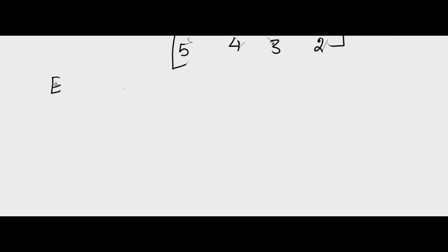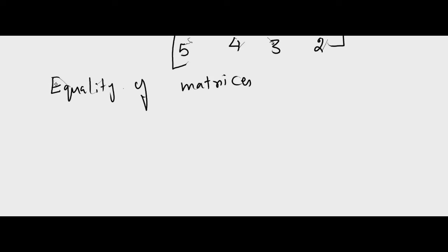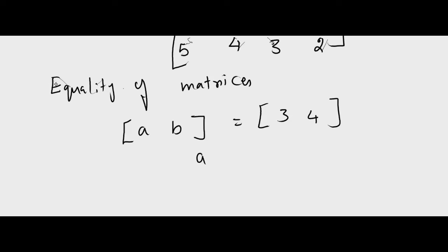Equality of matrices: two matrices are said to be equal if and only if they are of the same order — they have the same number of rows and columns — and the elements in the corresponding positions are equal. For example, [A, B] equals [3, 4] if and only if A equals 3 and B equals 4.